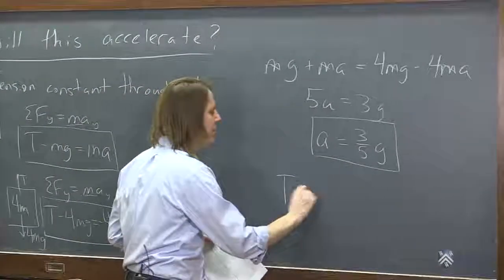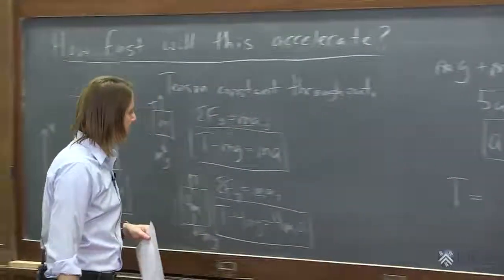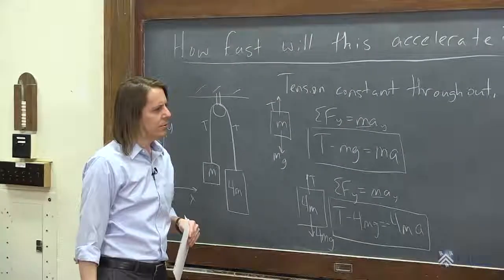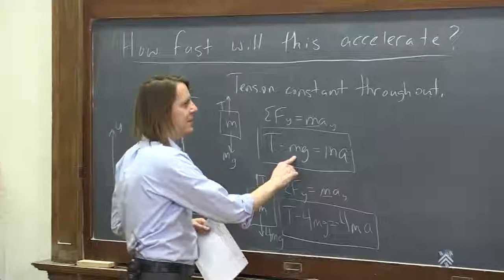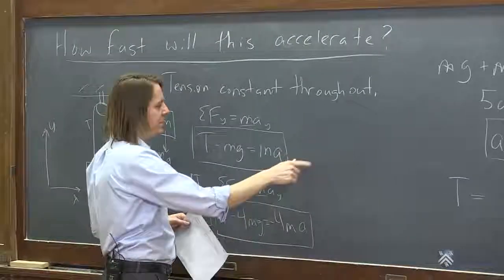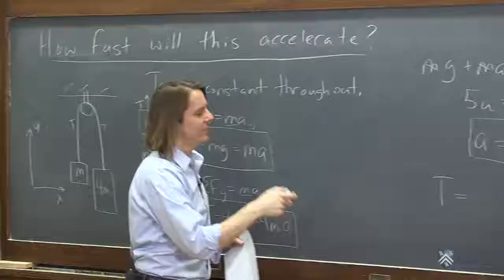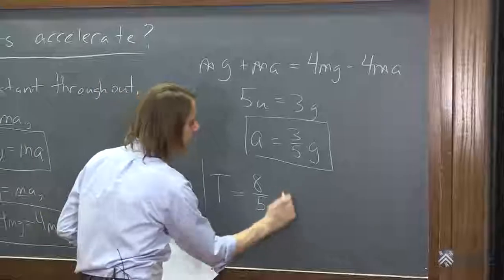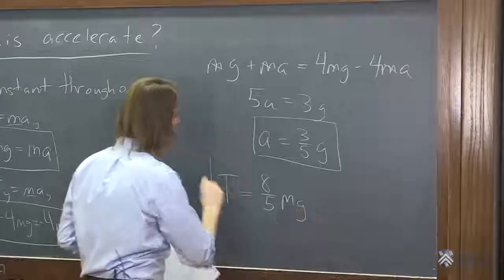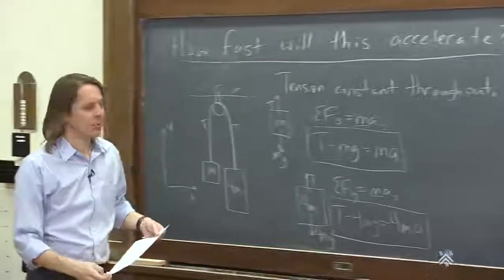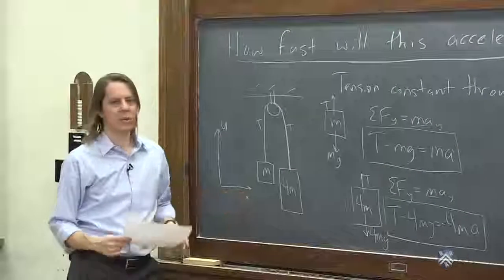We could also get T. The tension is the same in each side of the cable. And if A is 3 fifths G, it'd be easiest to get it from here. Right, MA plus MG. So it's 3 fifths G plus 5 fifths G, it's 8 fifths G. Oh, MG. All right. So the tension is somewhere between the weight of this one and the weight of that one.